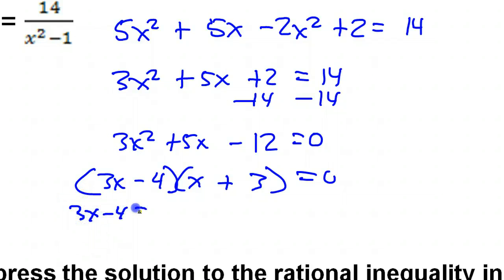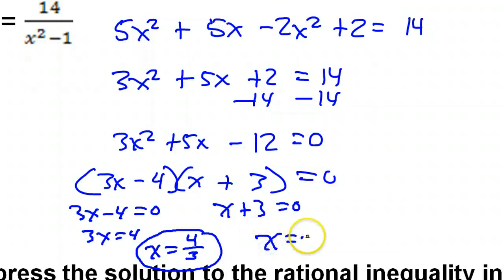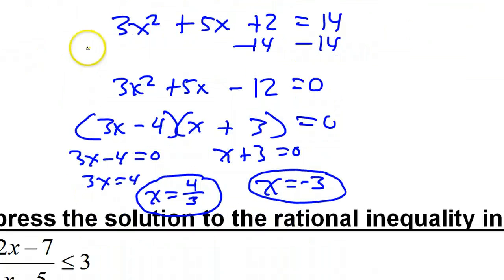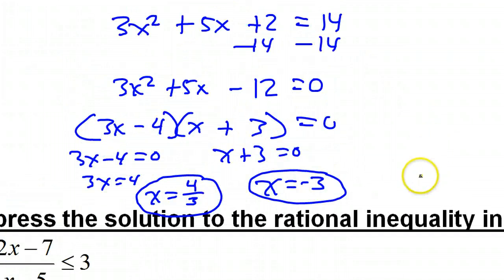Setting these equal to 0. You know, 3x minus 4 equals 0. x plus 3 equals 0. Alright. That's 3x equals 4, if I add 4 to both sides. x equals 4 over 3, if I divide both sides by 3. And, x equals negative 3. Okay? I'm looking for extraneous values while I'm doing this. x cannot equal 1. And, x cannot equal negative 1. But, I don't see a problem here.